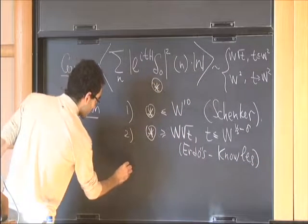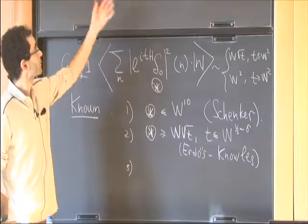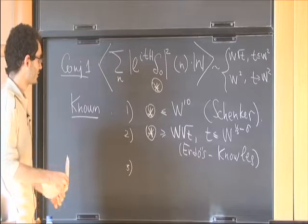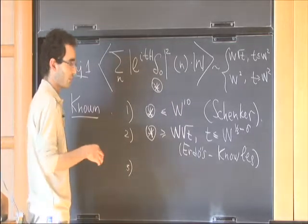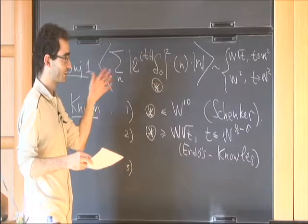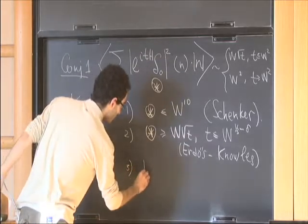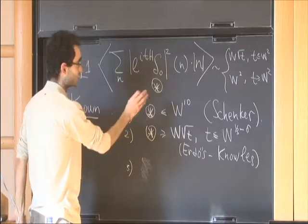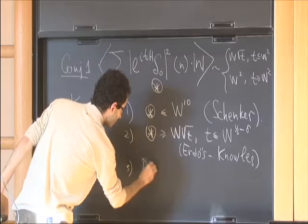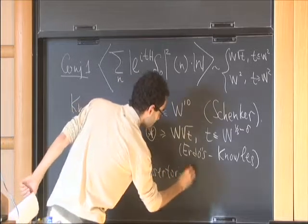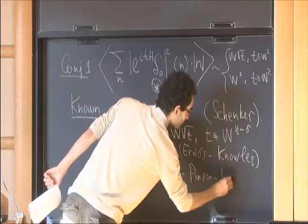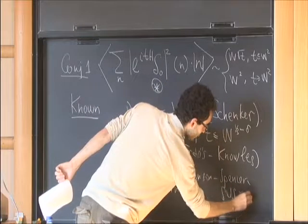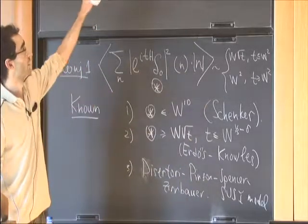Third, there are many variations on this model. One of them can be mapped to a supersymmetric model, studied extensively by Disertori, Pinson, Spencer, and Shcherbina. This doesn't apply directly to this model, but I mention it since much more detailed results are available there. Regarding the plus-minus entries: yes, I really mean Bernoulli variables, though conjectures exist in the same spirit for any distribution.